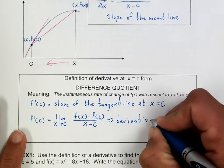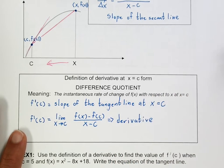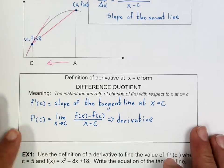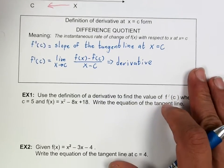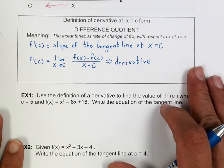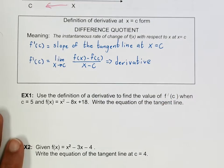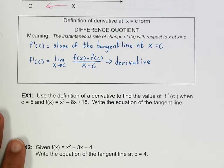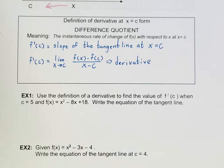On the next part, we're going to use this formula to solve a couple of problems. On example one, it says: use the definition of a derivative to find the value of f prime of c when c is equal to 5 and f(x) is equal to x squared minus 8x plus 18.